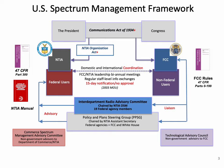Another interagency advisory body is the Policy and Plan Steering Group, PPSG, which was established by NTIA in 2005. The PPSG includes higher-level representatives at the assistant secretary or equivalent level from agencies that are major stakeholders in the spectrum issues under consideration, and includes FCC and White House representatives. The PPSG provides advice to the NTIA assistant secretary on spectrum-dependent telecommunication policies, strategic plans, and helps resolve major contentious spectrum policy issues.